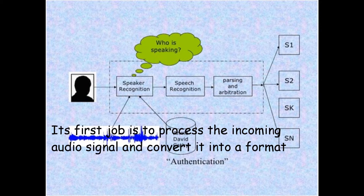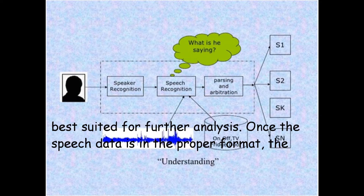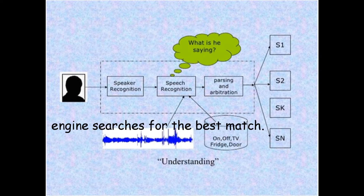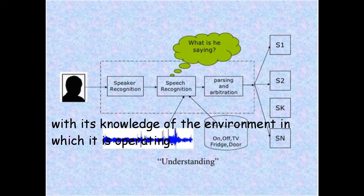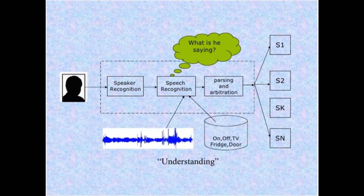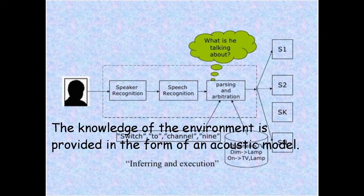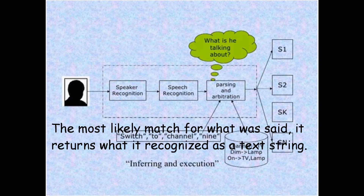The engine's first job is to process the incoming audio signal and convert it into a format best suited for further analysis. Once the voice data is in the proper format, the engine searches for the best match. It does this by taking into consideration the words and phrases it knows about, along with its knowledge of the environment in which it is operating — provided in the form of an acoustic model. Once it identifies the most likely match for what was said, it returns what it recognized as a text string.